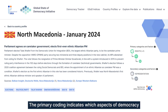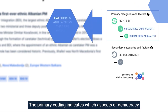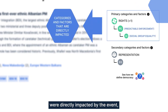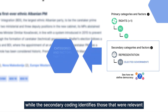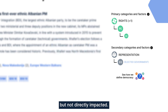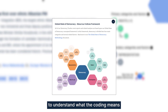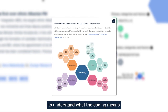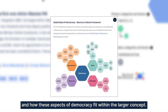The primary coding indicates which aspects of democracy were directly impacted by the event, while the secondary coding identifies those that were relevant but not directly impacted. You can click on the Global State of Democracy Framework icon to understand what the coding means and how these aspects of democracy fit within the larger concept.